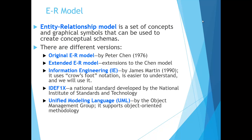The entity relationship model is a set of graphical symbols that can be used to create conceptual schemas or diagrams. To create the model, we need to understand the entities involved and their relationships with each other. For example, a student entity will be taking courses from the courses entity. The original entity relationship model was introduced by Peter Chen in 1976, and this is how we started looking at databases as entities related to each other.